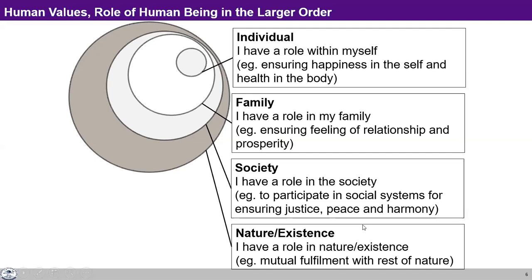When we work out the details of these feelings, all those will turn out as values for me in the family — those would be the human values for a human being in the family. Similarly, when I look at society, I have a certain role to play — for example, participating in the social systems for ensuring justice, peace, and harmony. And when I look at nature as a whole, one of the roles is ensuring mutual fulfillment with the rest of nature: with trees, plants, soil, waters, animals, and human beings. All of them will turn out as human values.